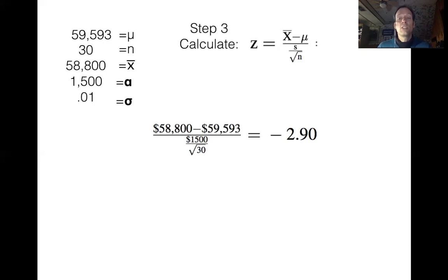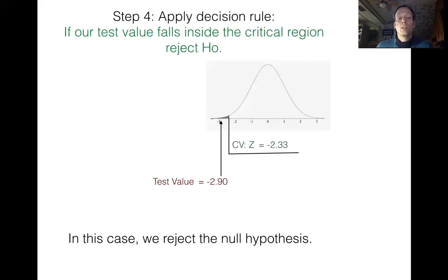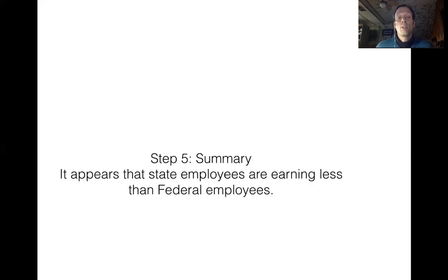And just like we did in the last question, we're going to compare negative 2.9 to our critical region. And our value negative 2.9 is clearly going to fall inside that critical region. So that means that when we apply the decision rule, the decision rule said that if our test value falls inside the critical region, reject the null hypothesis. So we're going to say that we're rejecting the null hypothesis. Now let's make it all official in our summary statement. We can say it appears that state employees are earning less amount than federal employees are.